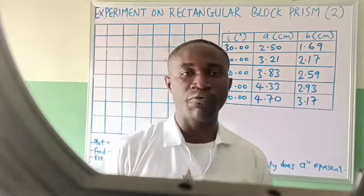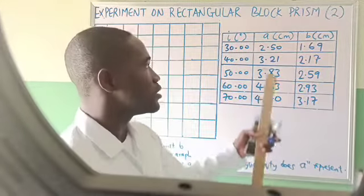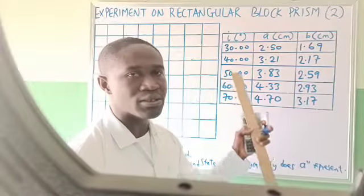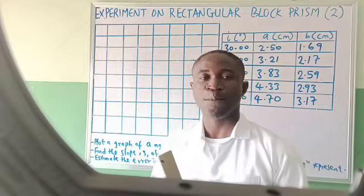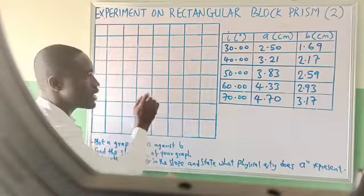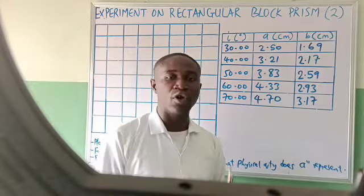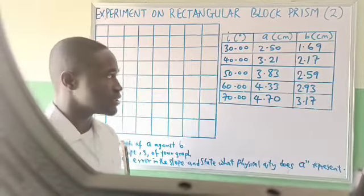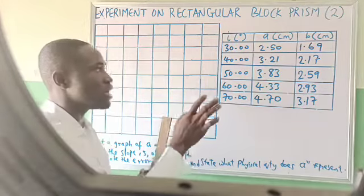Welcome to today's class on practical physics. The topic is an experiment on a rectangular or triangular glass prism. In this video we want to see how to plot the graph using the values we got from the results of the experiment we just performed. We have gotten our readings from the previous video and now we want to see how to plot the graph.